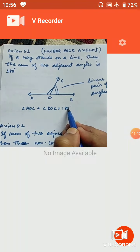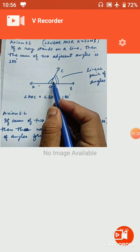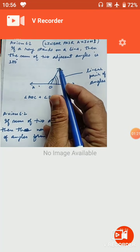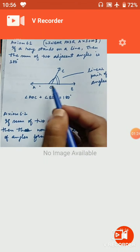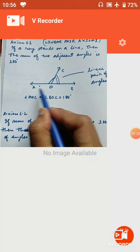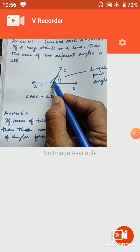Angle AOC plus angle BOC is equal to 180 degrees. Axiom 6.2 is just the opposite: if the sum of two adjacent angles is 180 degrees, with common arm OC and uncommon arms OA and OB, then the uncommon arms form a straight line — that is, AOB is a straight line.